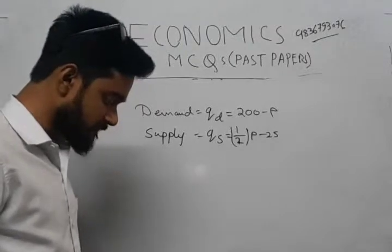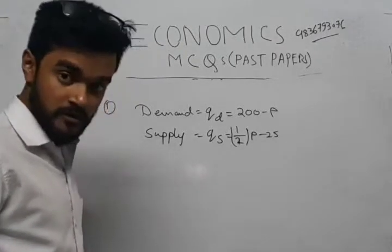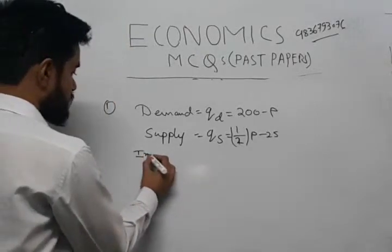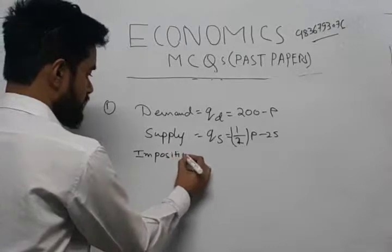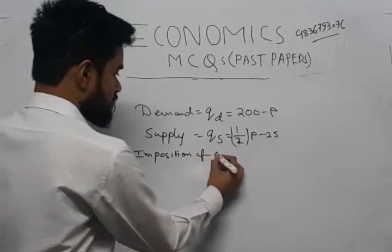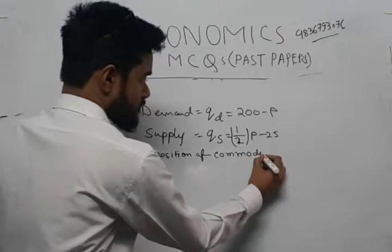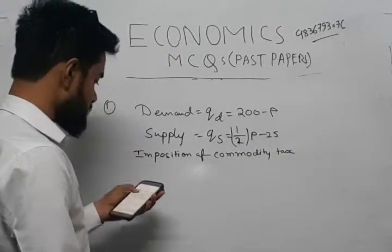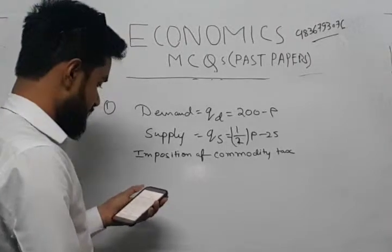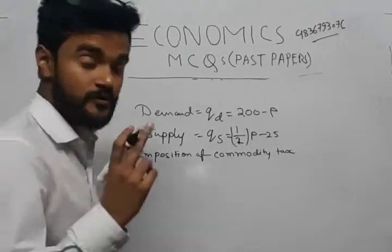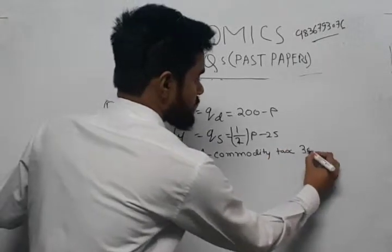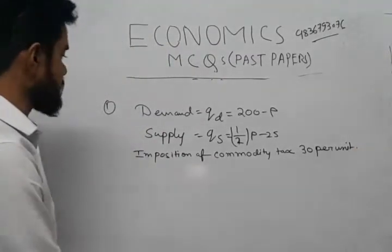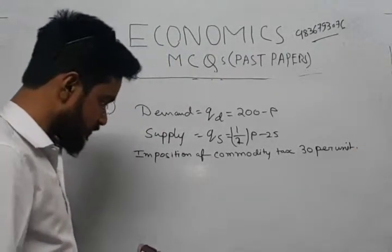There is an imposition of a commodity tax of 30 per unit on the output.